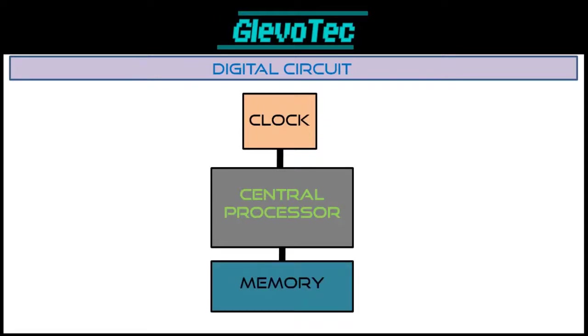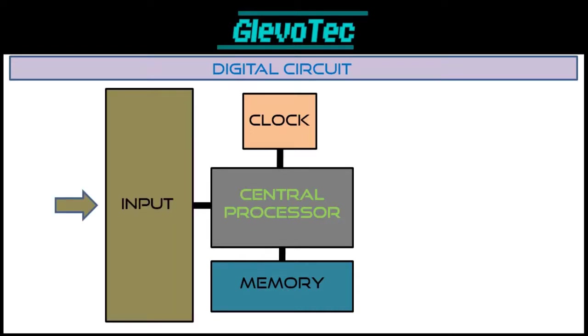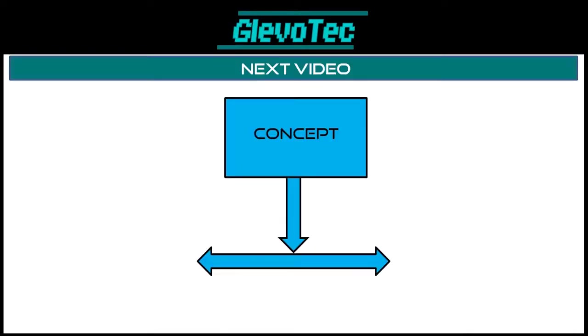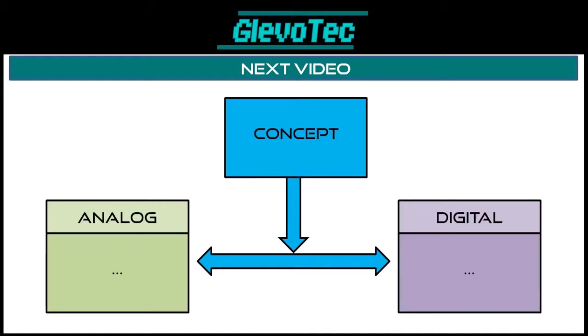Second, there is a memory block which the central processor uses to keep track of what it is doing. Then we have the input block, where our input signals are being converted into binary codes for the processor to use. Similarly, the output block converts the output binary code into output signals. In the next video we will take a look at an example where we will design an analog as well as a digital design and compare those side by side. Stay tuned to learn more about how to start making robots. Don't forget to subscribe, and see you next time!